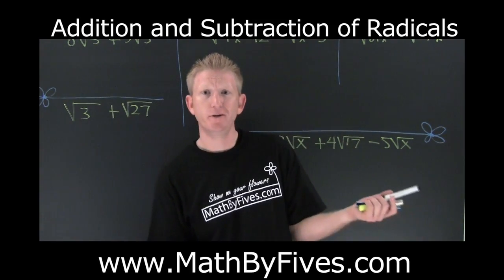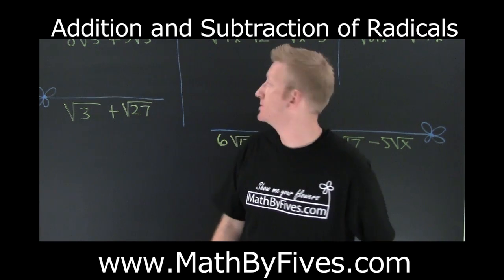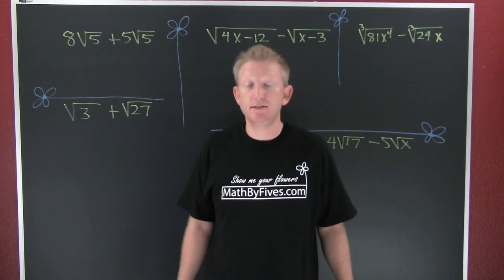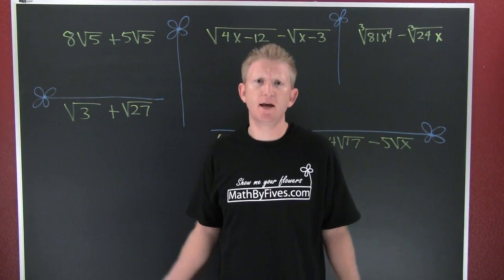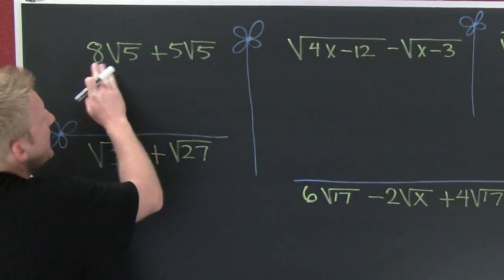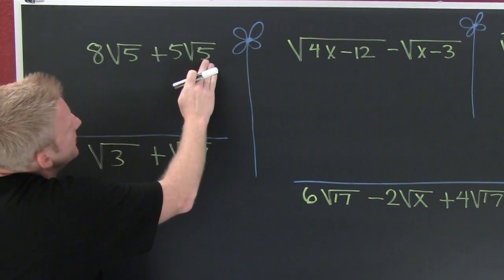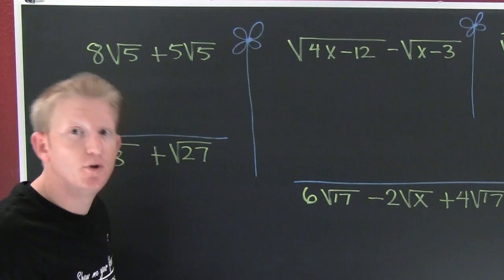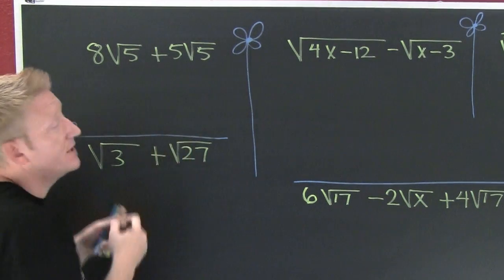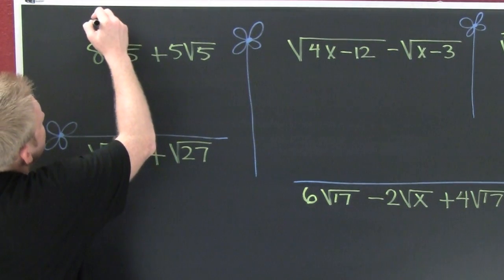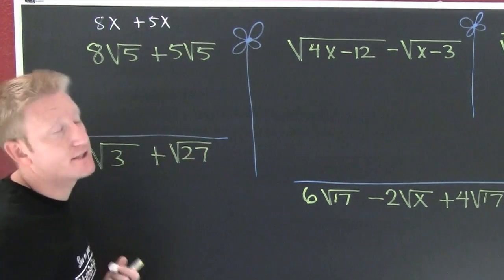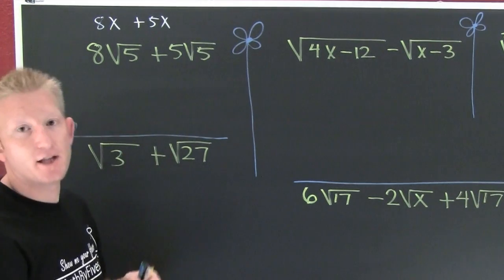Like radicals are radicals with the same index and the same radicand. Adding and subtracting like radicals works just like adding like terms. For example, eight root five and five roots of five are like radicals — they both have an index of two and a radicand of five. This is just like adding eight x plus five x.